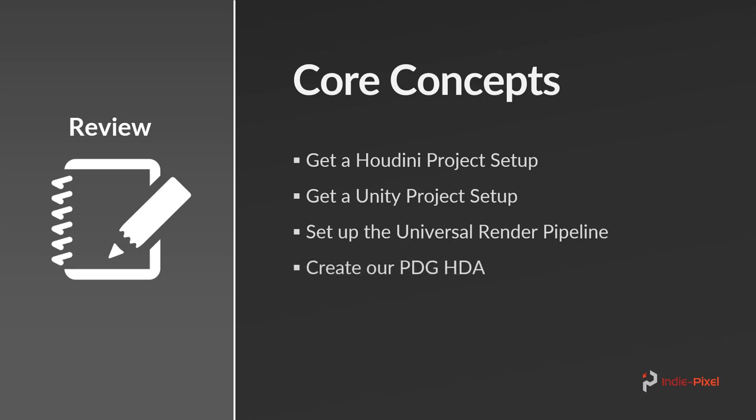Now we're going to go and create a PDG HDA. We're going to learn a little bit about setting up PDG with TOP networks and getting an HDA, so that way we can bring it into Unity. And then finally we're going to take a quick look at using the PDG asset link inside of Unity, which will allow us to run our TOP networks that are nested inside of our HDAs inside of Unity.